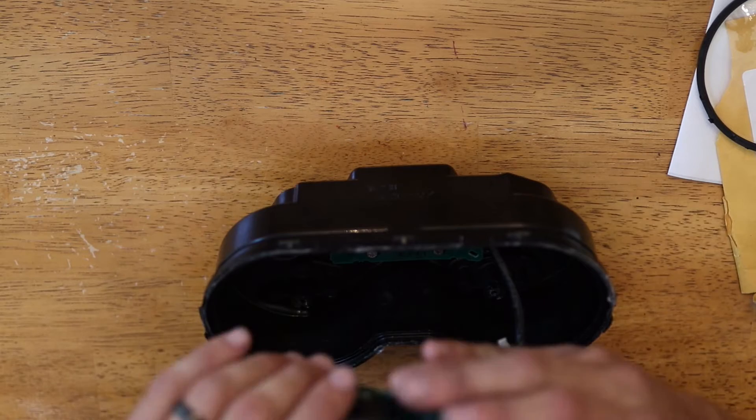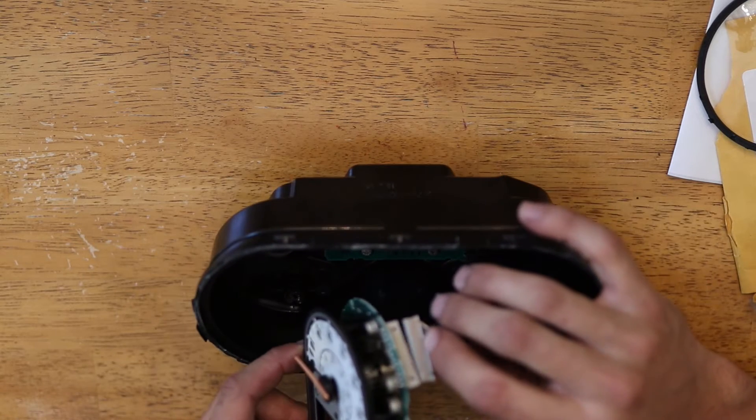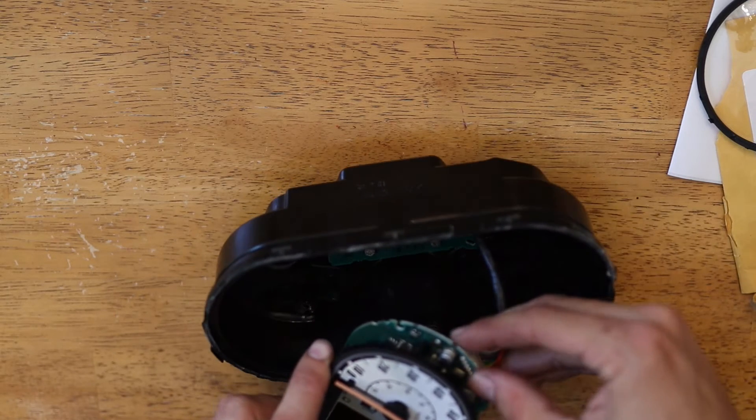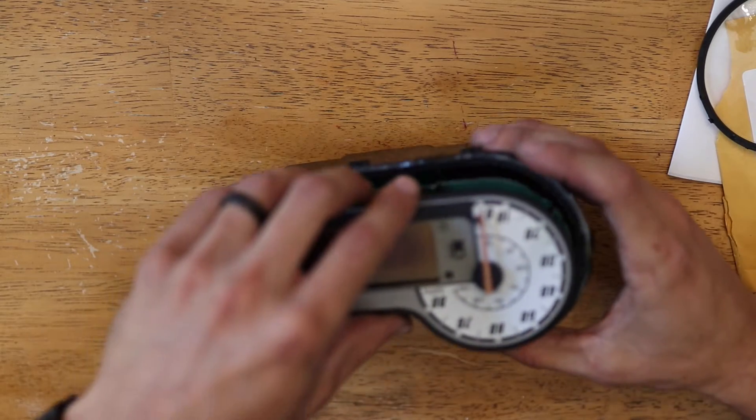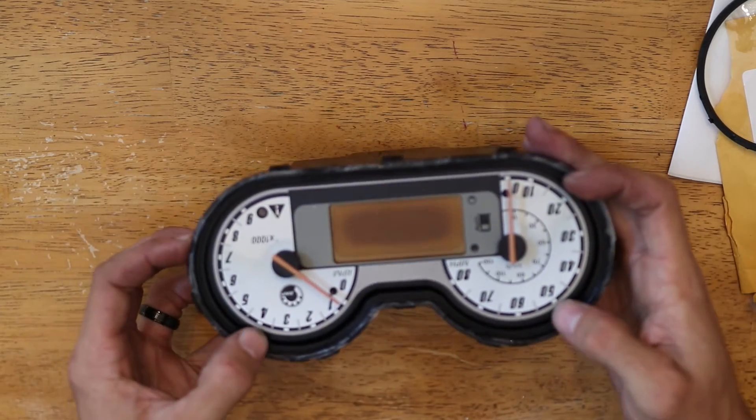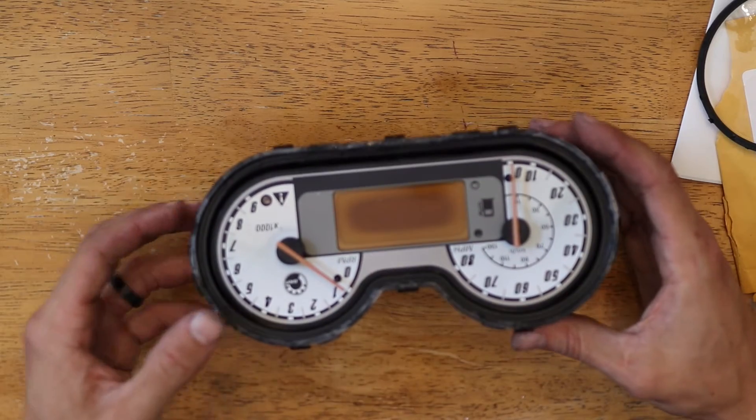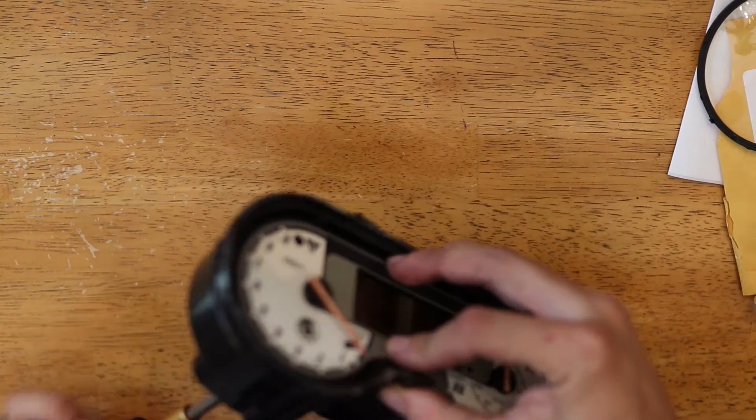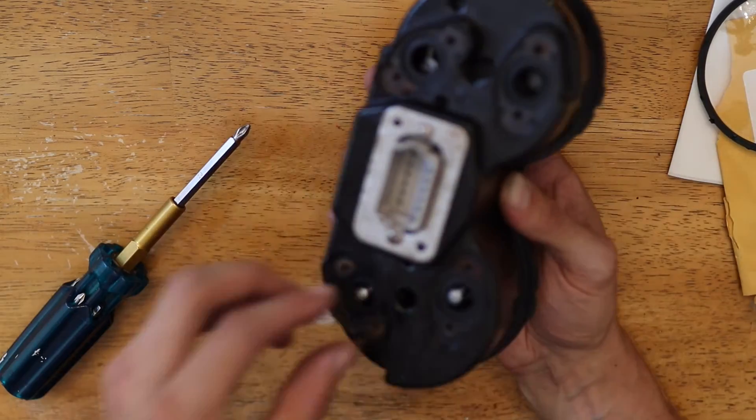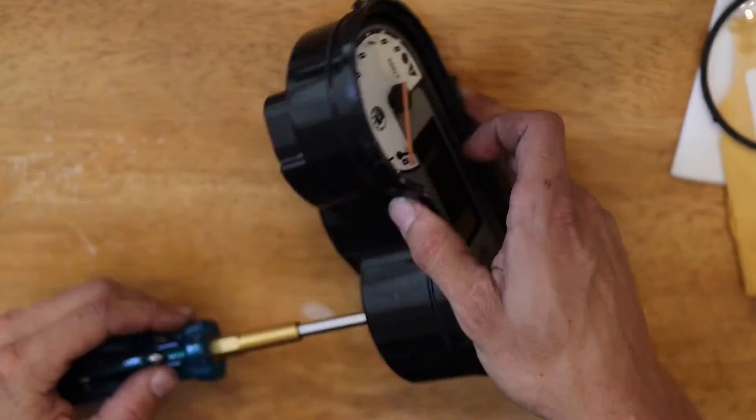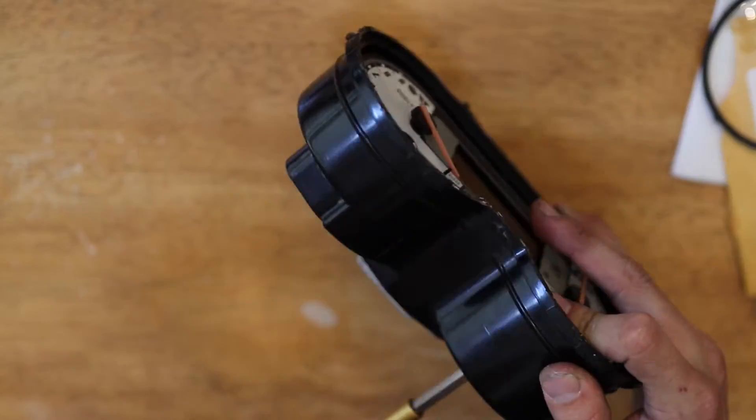Now for this, if you do the Dremel method, it will be a little bit different. There is a plug right there to attach the board itself to the plug on the back of the gauge assembly and those four screws go on to hold the gauge to the housing.